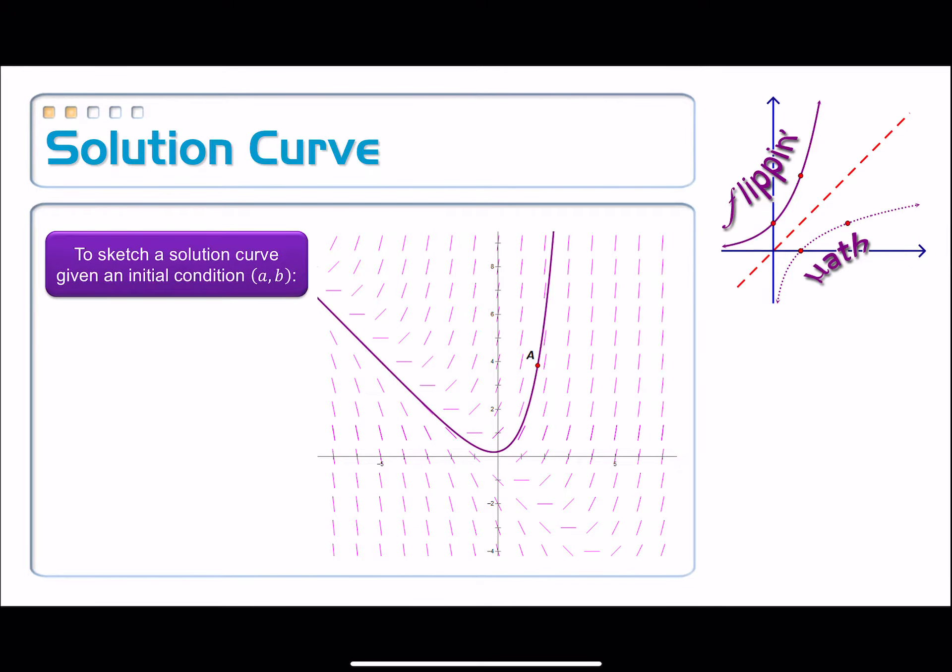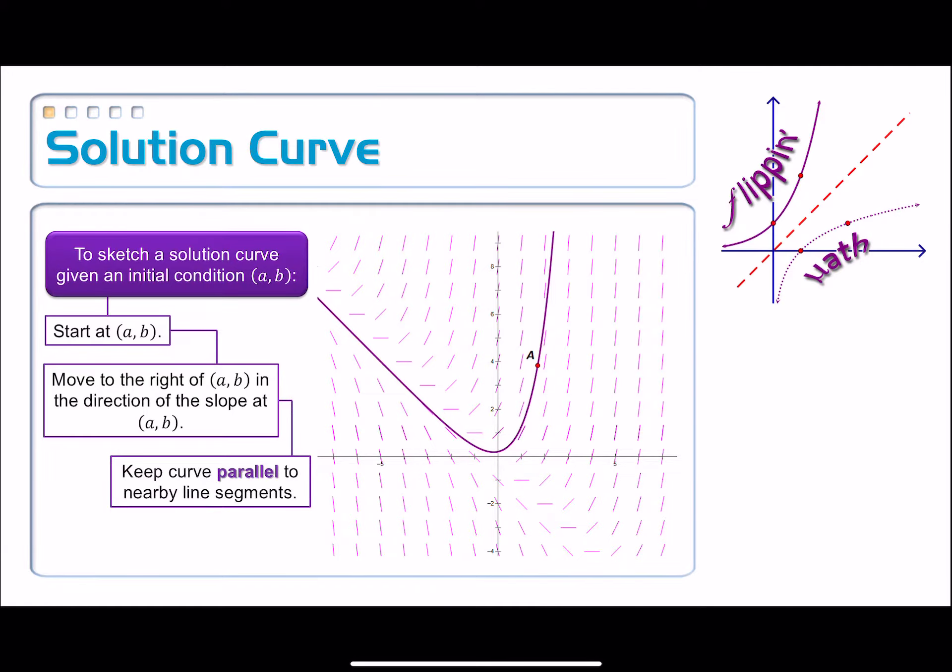To sketch a solution curve with this initial condition (a, b), you start at that point and move towards the right. When we move towards the right, follow the direction of all of those nearby segments, trying to keep your graph parallel to those nearby segments. You don't just veer off towards the right or left because these things are trying to keep you in check. Then repeat that going backwards in the other direction towards the left, keeping your graph parallel to those nearby segments.